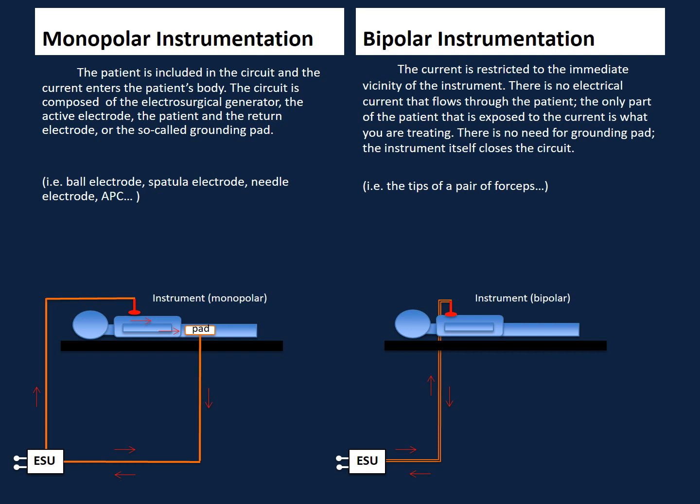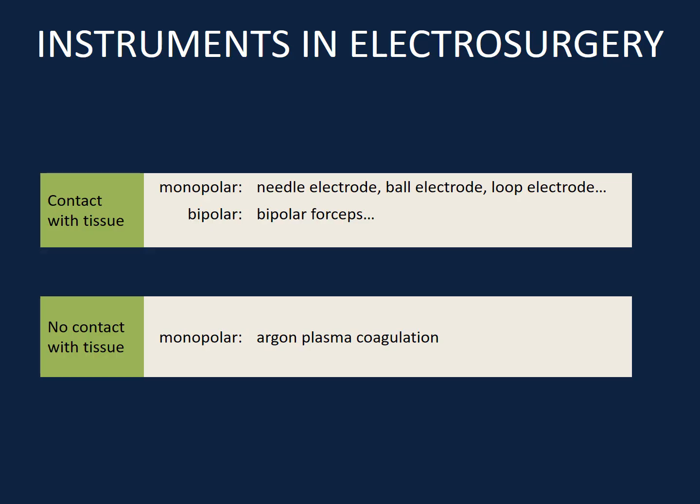Even with the new ESU, we continue to hear the expression "grounding the patient." Actually, we have moved from the ground reference to isolated units. In endoscopy, the active electrode is able to work either in a contact or a non-contact manner. In contact mode, the current is immediately dispersed into the tissue, whereas in non-contact mode, an arc is created between the electrode and the tissue surface, causing thermal effect.